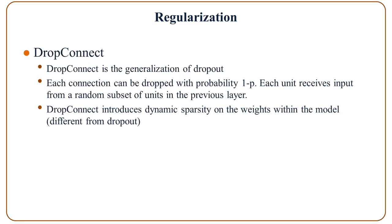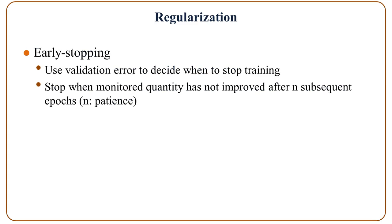DropConnect is the general version of dropout — each connection can be dropped with probability 1-p, and each neuron receives input from a random subset of neurons in the previous layer. It introduces dynamic sparsity on the weights within the model, which is different from the dropout method. Early stopping uses validation error to decide when to stop training.